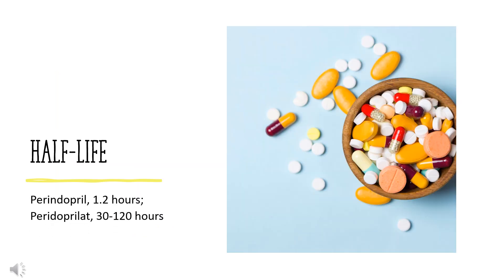Half-life: Perindopril has a half-life of 1.2 hours; perindoprilat has a half-life of 30 to 120 hours. The long half-life of perindoprilat is due to its slow dissociation from ACE binding sites.